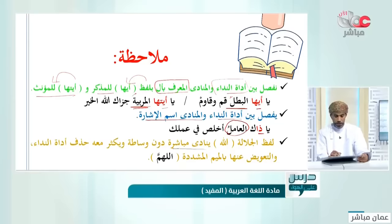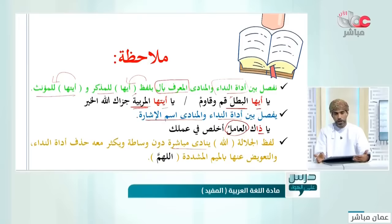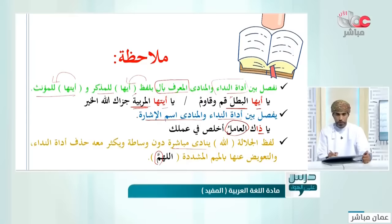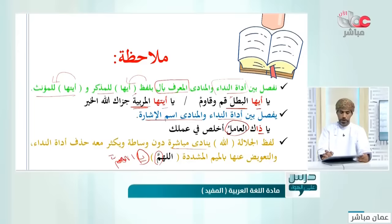لفظ الجلالة 'الله' ينادى مباشرة دون وساطة، ويكثر معه حذف أداة النداء 'يا' والتعويض عنها بالميم المشددة. فقولنا 'اللهم' هي في الأصل 'يا الله'، حذفنا أداة النداء وعوضنا عنها بالميم المشددة في آخره. هذا ما يختص بالمنادى المبني.